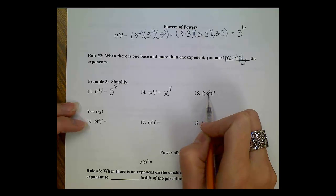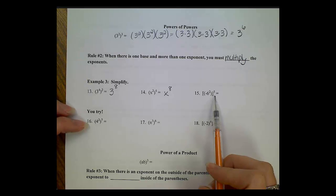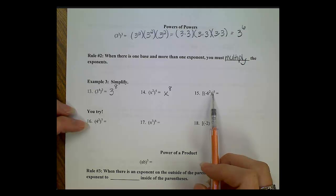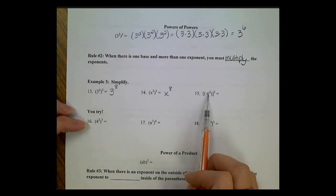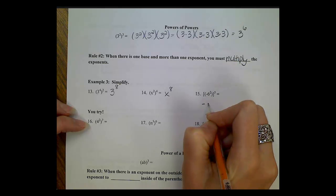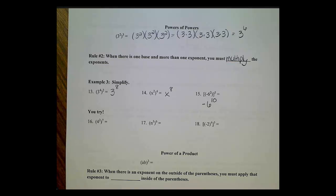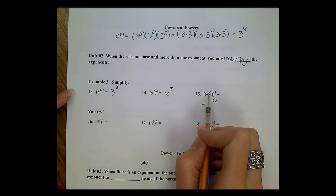Next problem: negative 6 squared, then raised to the 5th power. Notice this problem has brackets, which serve the same purpose as parentheses — they just look different to avoid confusion with multiple sets of parentheses. Starting in the center, we have negative 6 squared. Only the 6 is being squared, so we copy down that negative and write the 6. Then we have one base and two exponents, so we multiply: 2 times 5 gives negative 6 to the 10th power. Always ask yourself what the exponent is being applied to — just the number, or also the negative.